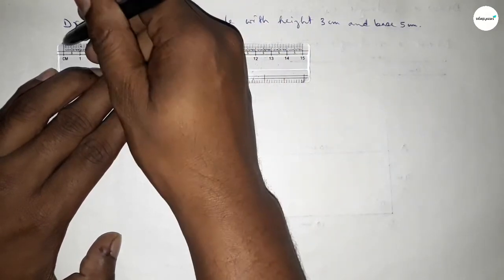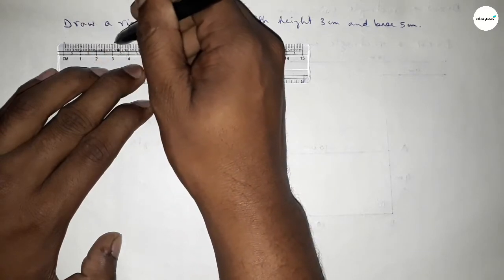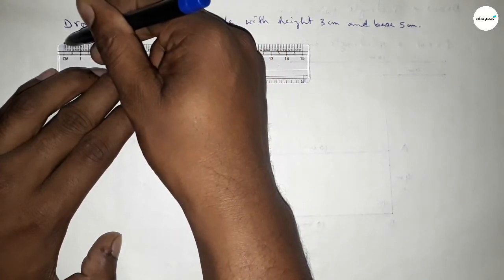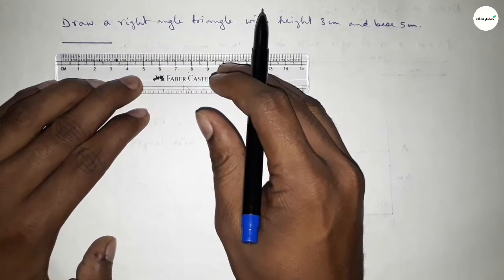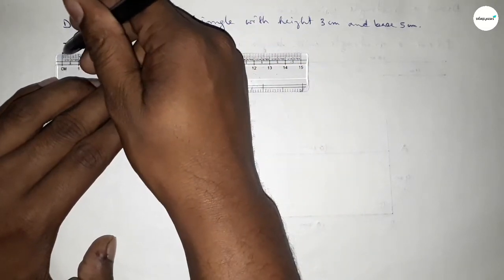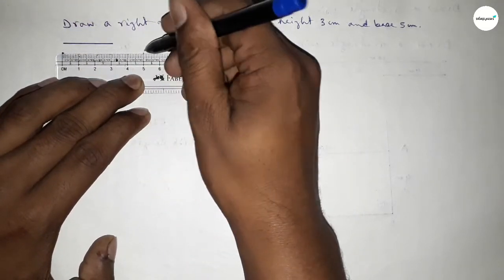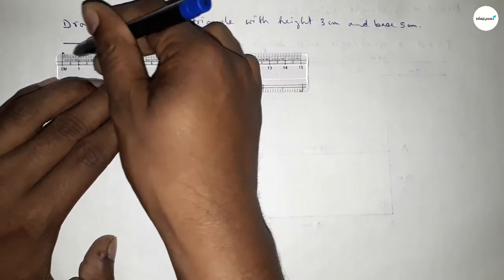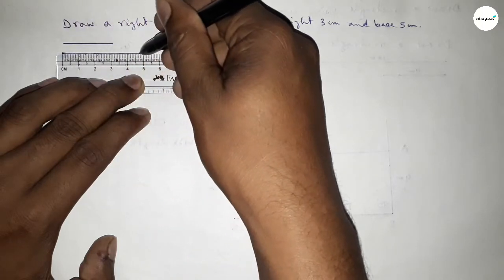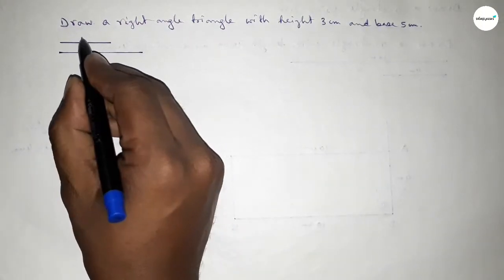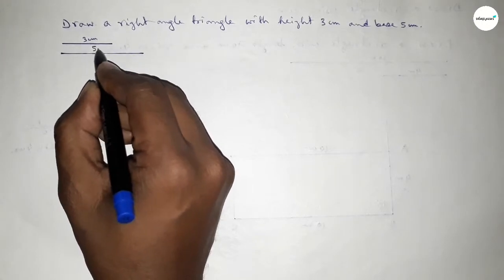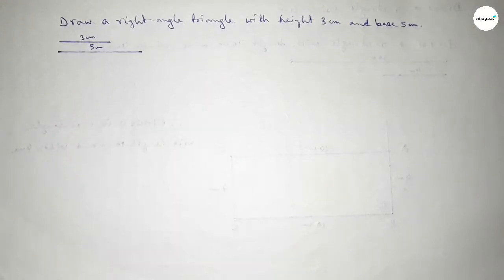First of all, we draw a line of length 3 centimeter — this is 3 — and then another line of length 5 centimeter — this is 5. So this side is 3 centimeter and this side is 5 centimeter.